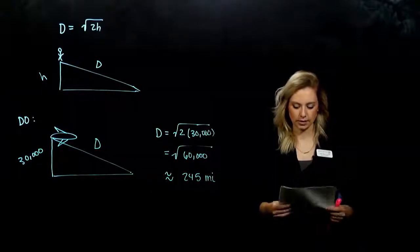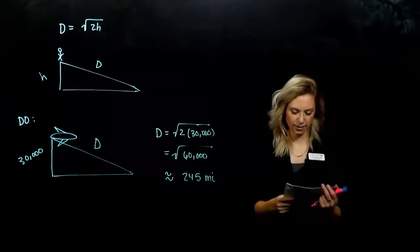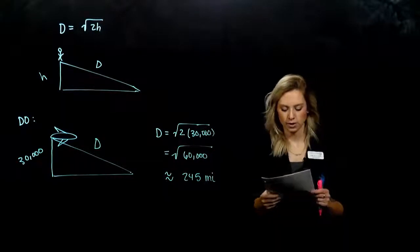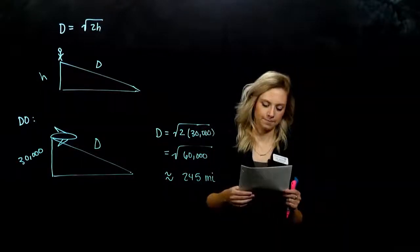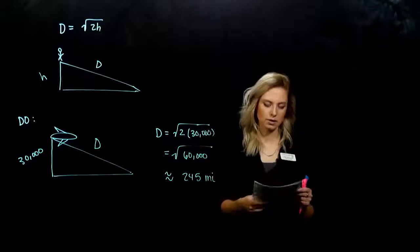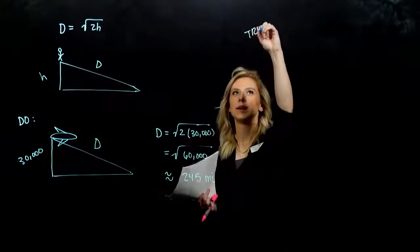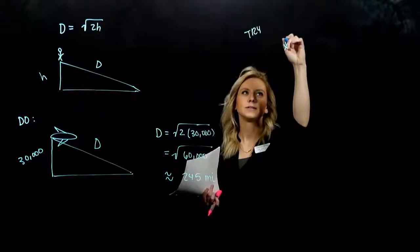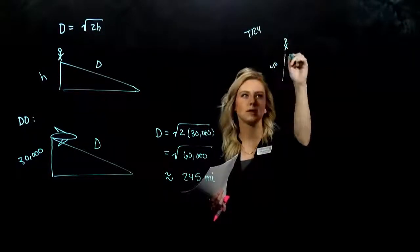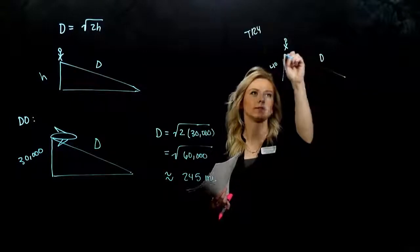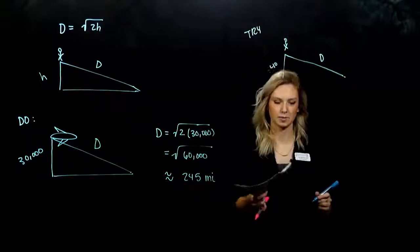So go ahead and take the next one. A sailor climbs 40 feet up the mast of a ship to the crow's nest. How far can he see to the horizon? So in this case, again, drawing it out, what's happening? A little person is climbing up and he is 40 feet in the air. We want to figure out the distance.